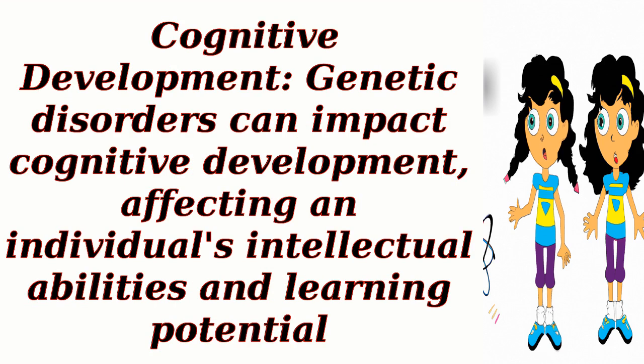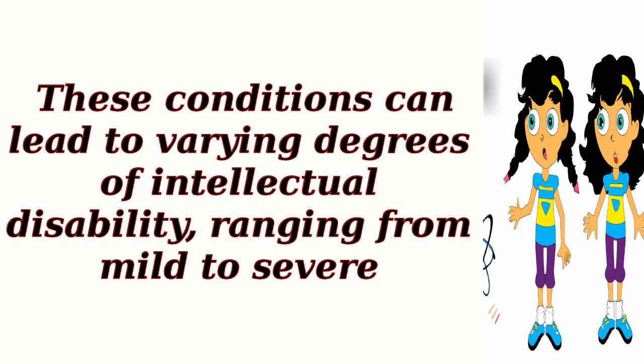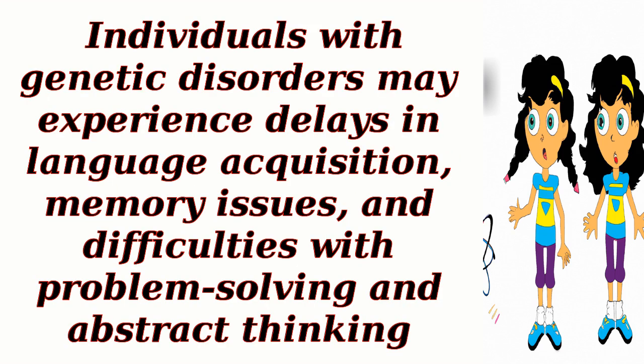Cognitive development: Genetic disorders can impact cognitive development, affecting an individual's intellectual abilities and learning potential. Examples of such disorders include Down syndrome, Fragile X syndrome, and Prader-Willi syndrome. These conditions can lead to varying degrees of intellectual disability, ranging from mild to severe. Individuals with genetic disorders may experience delays in language acquisition, memory issues, and difficulties with problem-solving and abstract thinking.